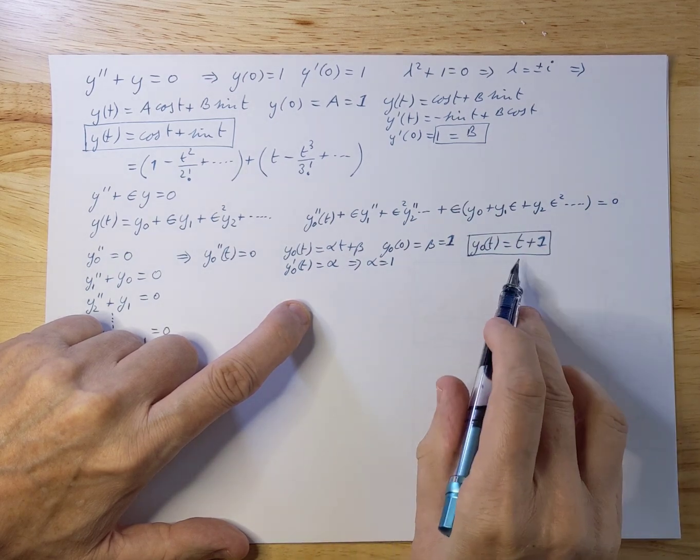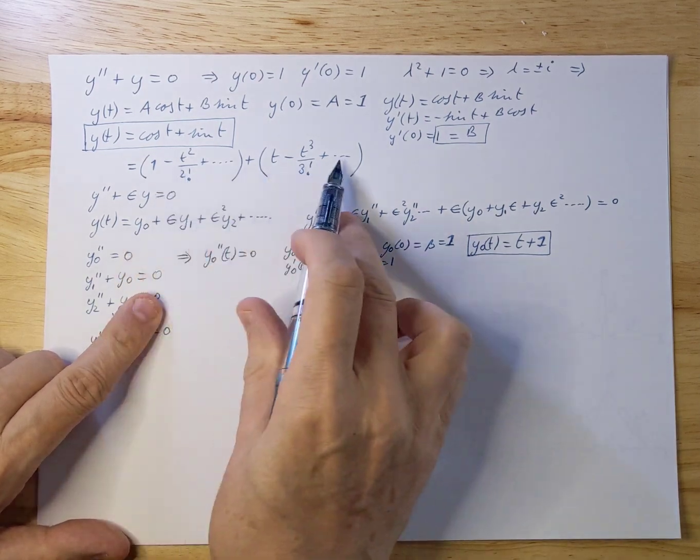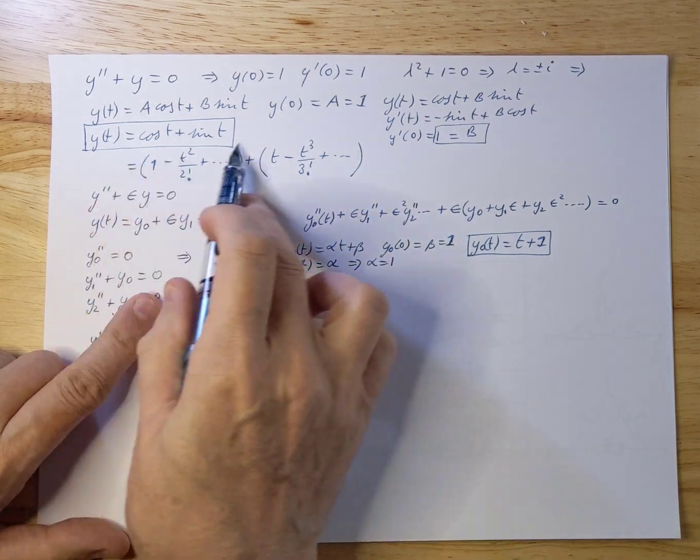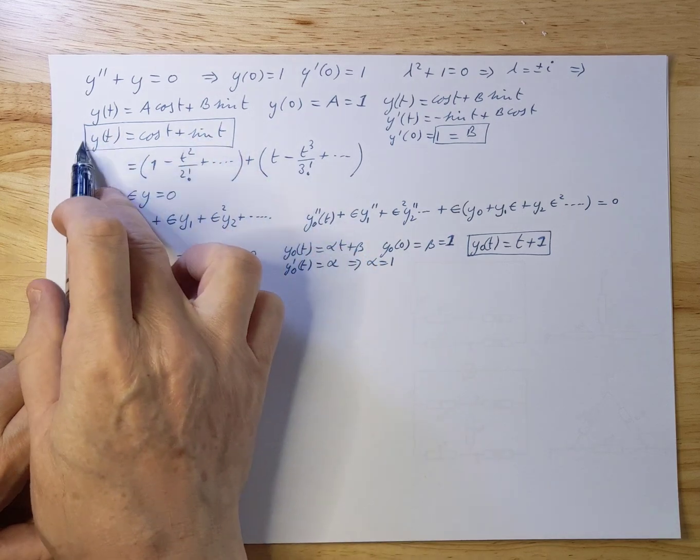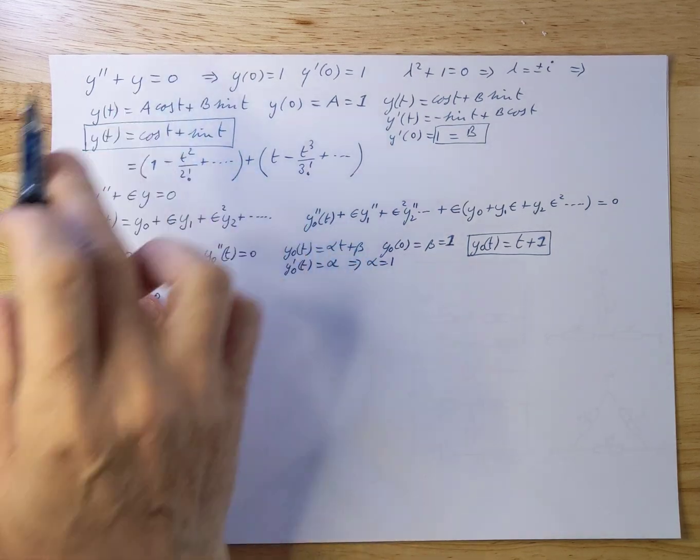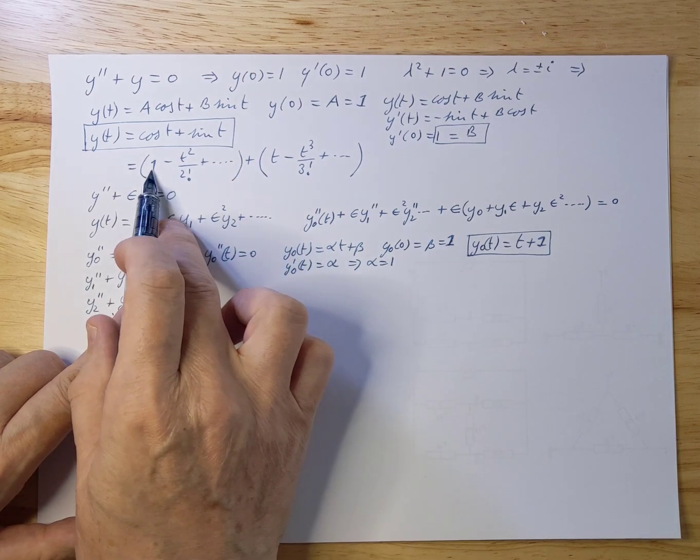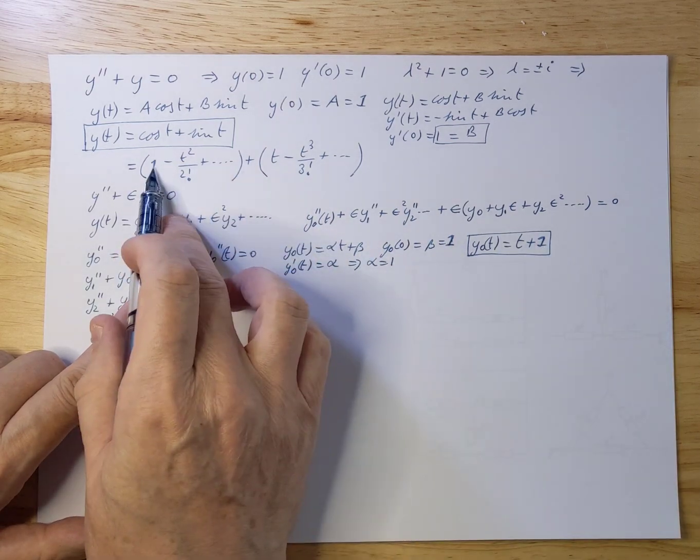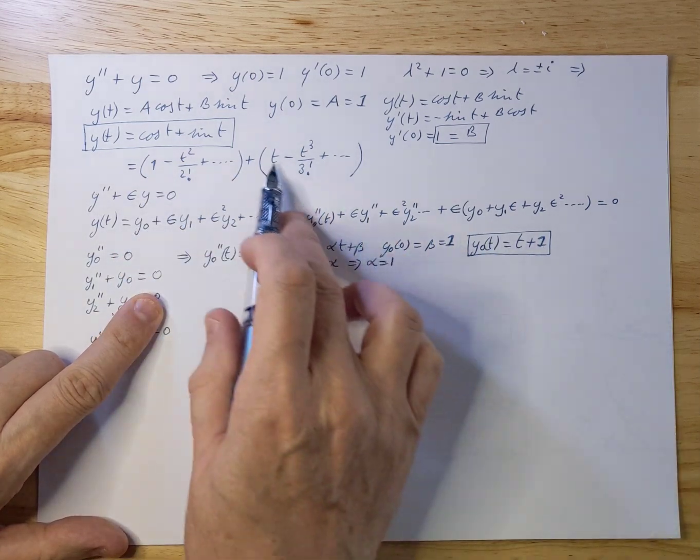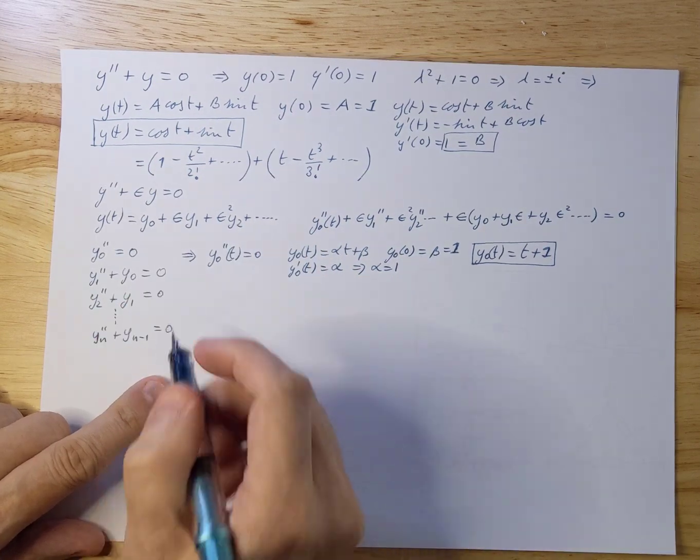And if you look at the series here of the result, of the real true result, if you would calculate it out like we can, because it's a very simple equation, you see that the first two terms are already there. 1 is there and t is there. So now let's continue.